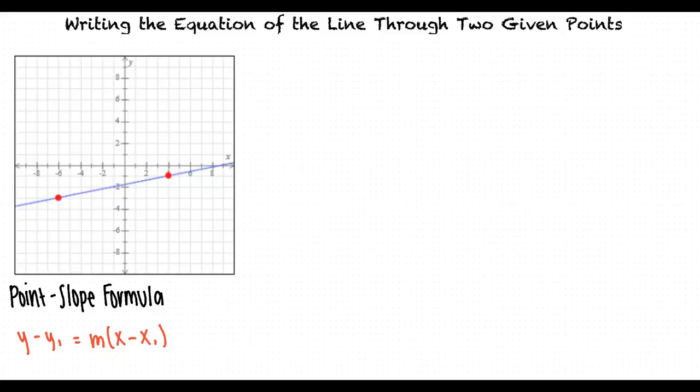We can find the slope m of a line passing through the points x1 comma y1 and x2 comma y2 as follows.